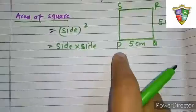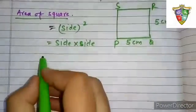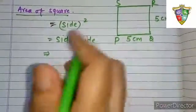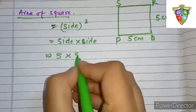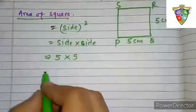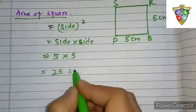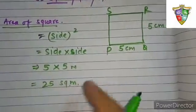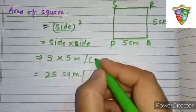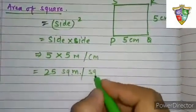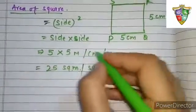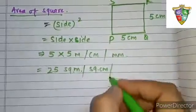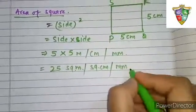Since all the sides of a square are equal, we can say that 5 into 5, or side into side, equals 25 square units. If it is in meters, your answer will be in square meters. If your units are in centimeters, it will be square centimeters. If your units are in millimeters, the answer will be square millimeters.